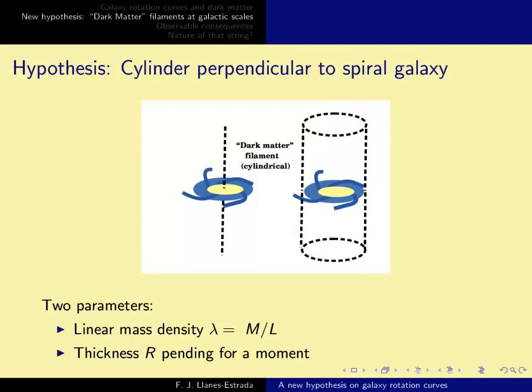So here's the picture. The galaxy is this blue and yellow blob at the center, and then you have either a cylinder or a filament threading it through the center. And if you take the perpendicular plane, which is where the galactic rotation curves lie, then they would fall off with one less power of r.